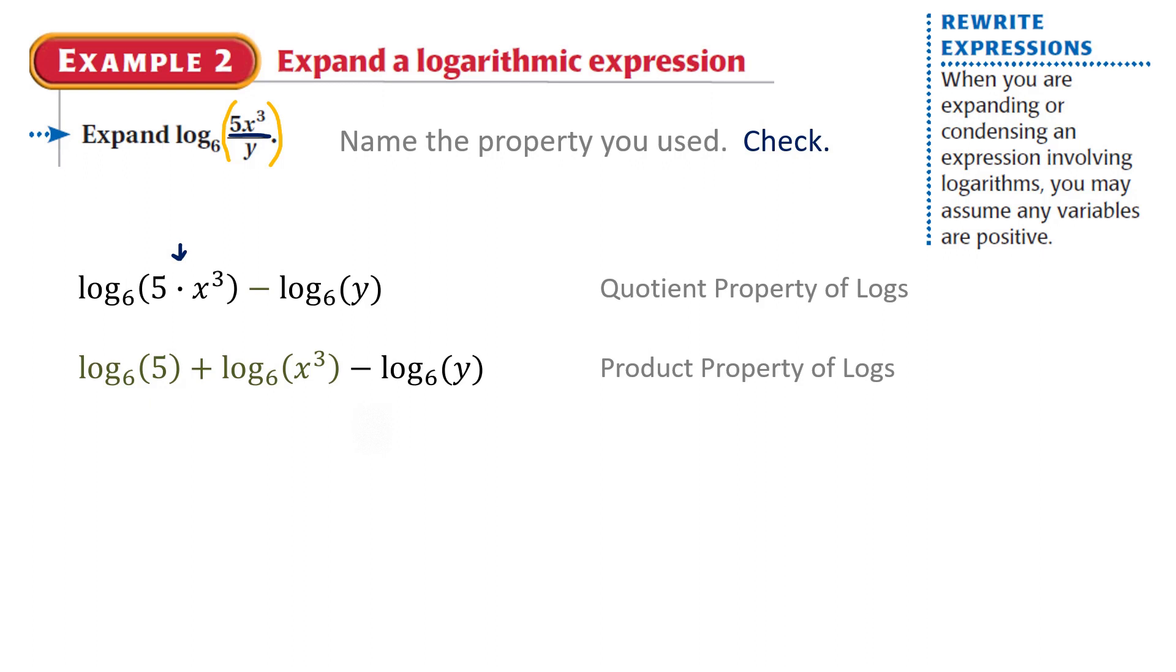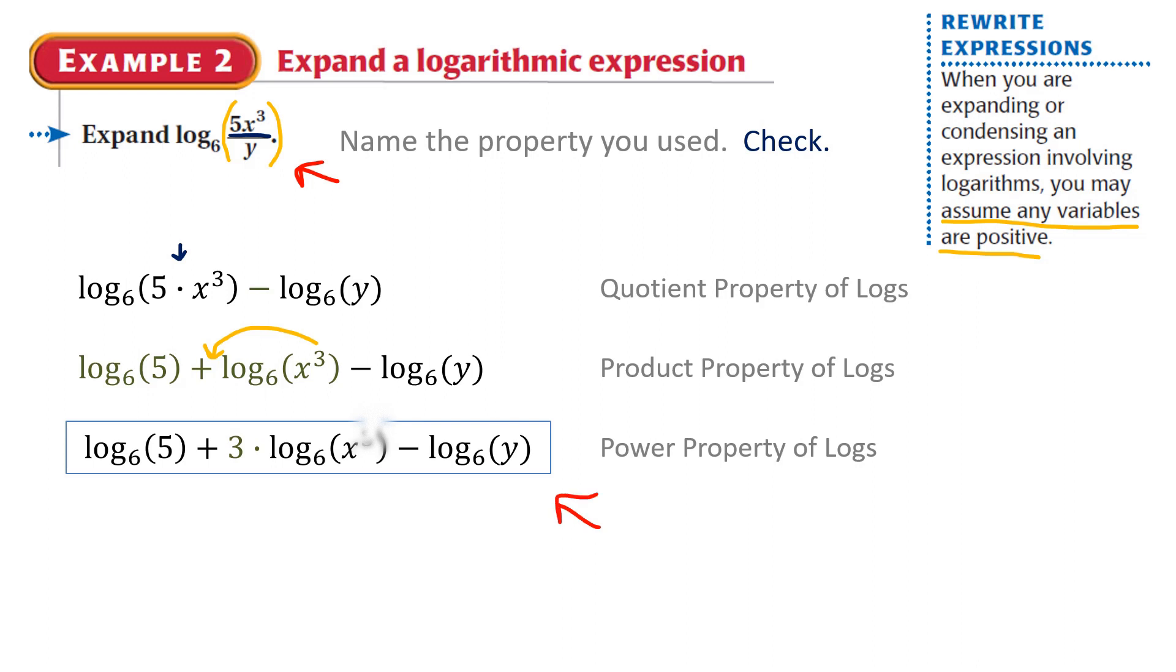And finally, you could use the power property of logs. Again, make that arrow. It will help you remember it. And that gives us our final answer. If we want to check, just assume that all the variables are positive. Pick a number for x, pick a number for y. Substitute it into the original. Substitute it into the final answer. And they should be equal.